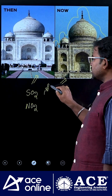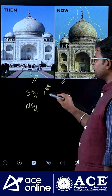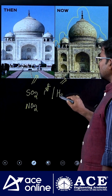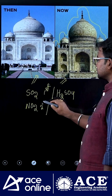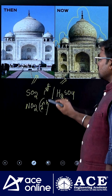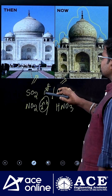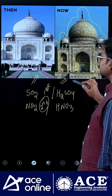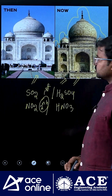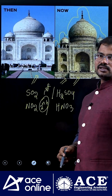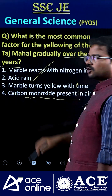The major chemicals responsible for acid rain are SO2 (sulfur dioxide), which forms H2SO4 (sulfuric acid), and nitrogen dioxide (NO2), which forms HNO3 (nitric acid). Because of these gases and acids, the color of the Taj Mahal turns yellow. That is why the correct answer is option two.